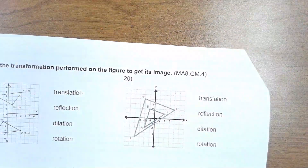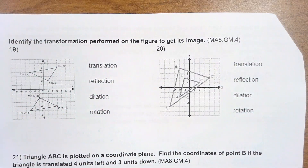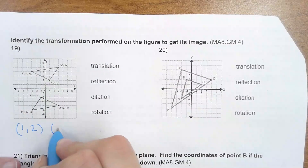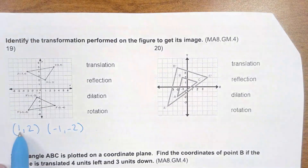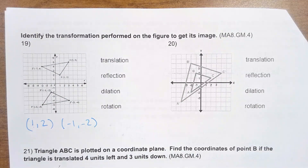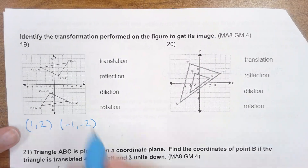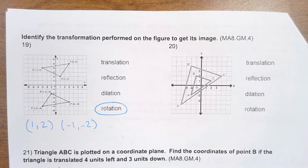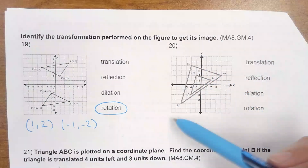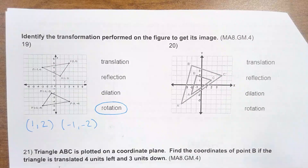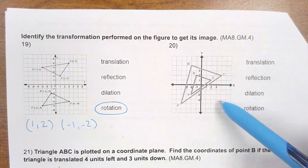Identify the transformation performed on the figure to get its image. Looking at the first one: X was at (1, 2) and X prime was at (−1, −2). Both x and y got multiplied by −1. The rule for multiplying both x and y by −1 is a 180-degree rotation. For the next one, I can see two different sizes without even looking at the ordered pairs, so the only transformation that enlarges or reduces a figure is a dilation.